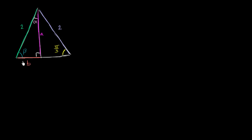The first thing I want to do in this video is, given the information about this triangle, figure out the unknowns: the length a, the length b in orange, the measure of angle alpha in radians, and the measure of angle beta in blue.